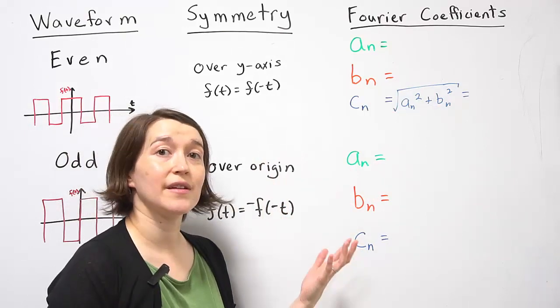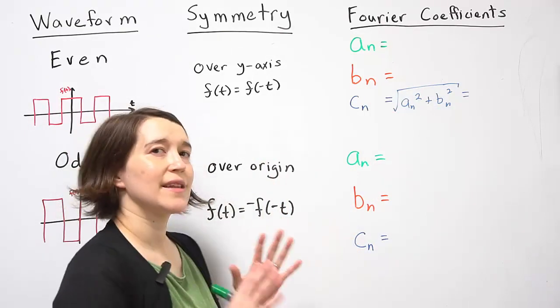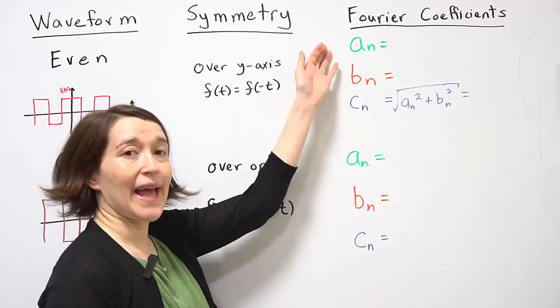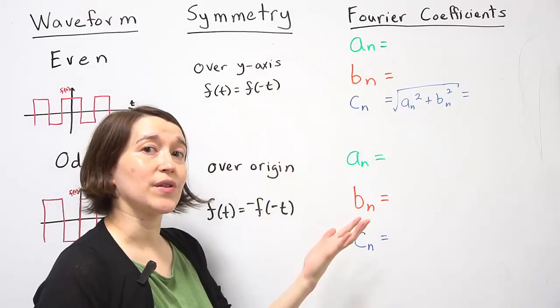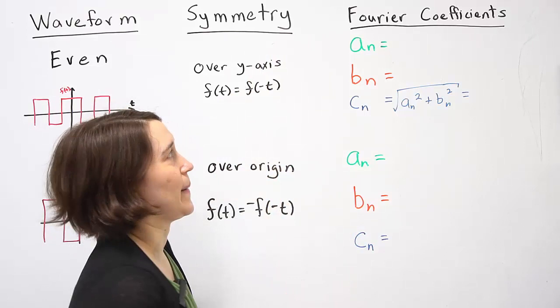When we write out the Fourier coefficients for an even waveform, we're going to get some simplifications. An is based on cosine and actually that's going to be exactly the same.